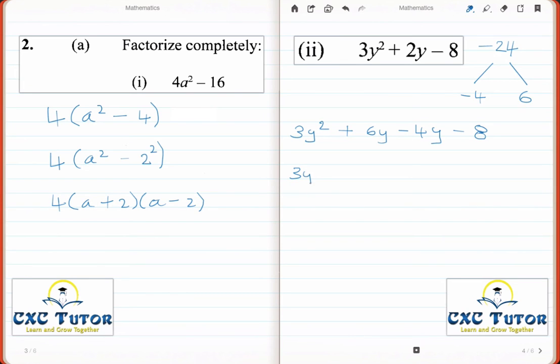We factorize first the 3y, and that should leave us with y plus 2. Secondly, we factor out the minus 4, which will leave us with y plus 2. So therefore, our answer is y plus 2, that is one factor, and the second factor is 3y minus 4. This is our answer.